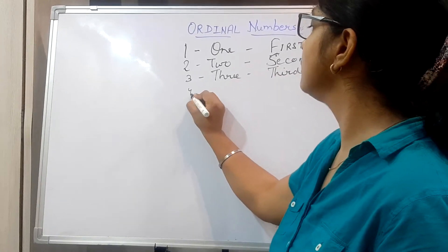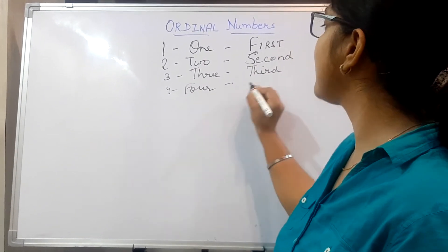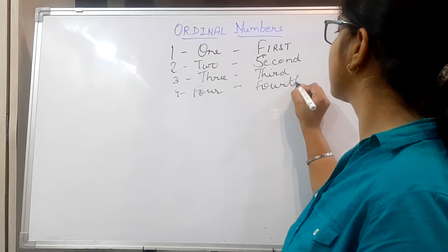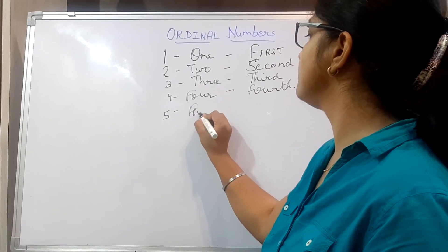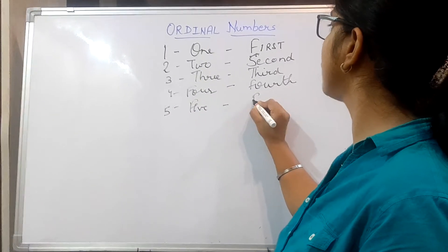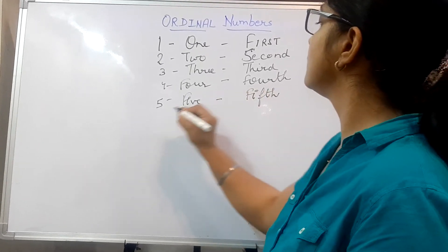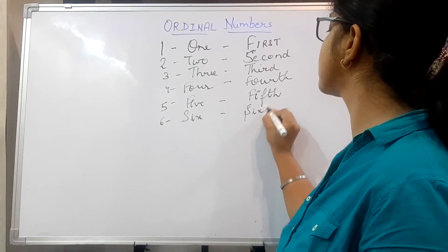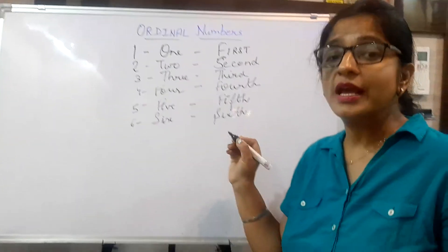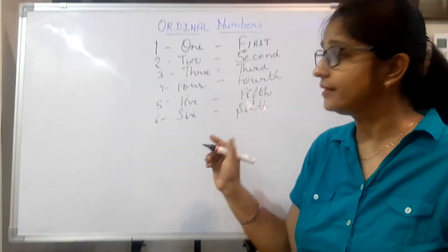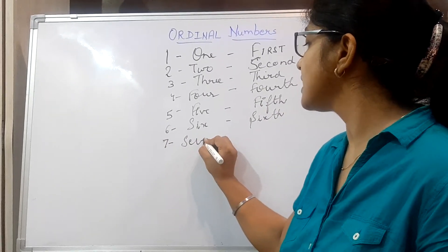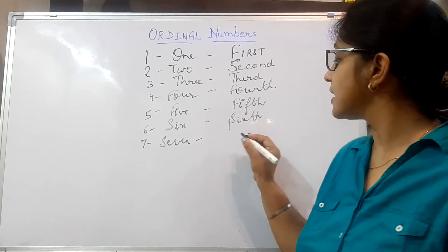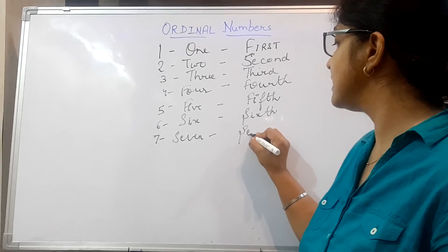For 4, in simple maths it is 4, but ordinally it is fourth. And for 5, you say 5 in maths, but in the language of ordinal numbers we say fifth. For 6 — 'See, I am standing in the sixth position. I study in sixth standard.' For 7, if we have to speak in ordinal way, we say 'My friend studies in seventh class.'